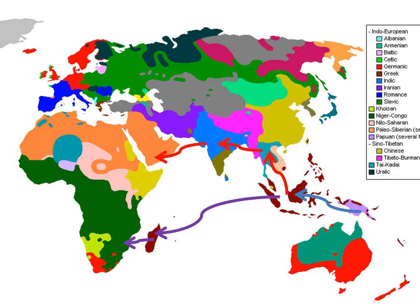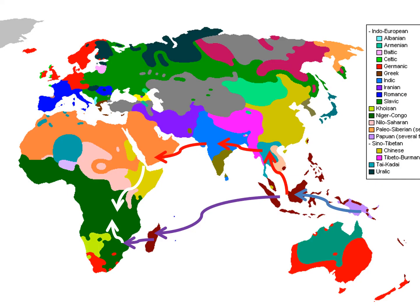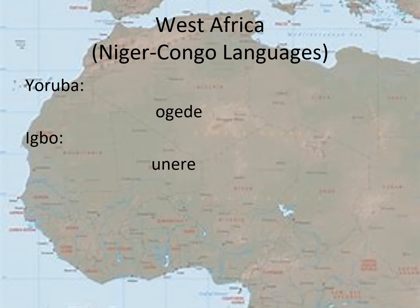In Central Africa, whether bananas were introduced from the north or the south is still a mystery, but they got there one way or another. The most well-known language in Central Africa is by far Swahili, where the word for banana is ndizi. Continuing west until we reach modern-day Nigeria, two of the dominant languages are Yoruba and Igbo. These two languages are not mutually intelligible as far as the word for banana is concerned, but the word structure is similar — one vowel followed by one consonant, with the pattern continuing until the word ends with a single vowel.